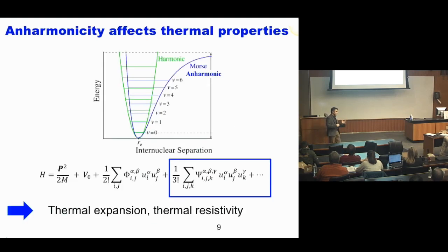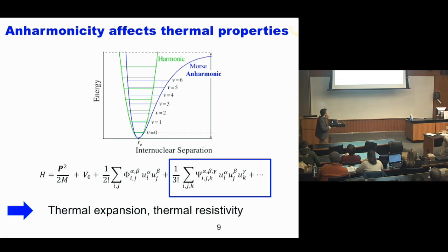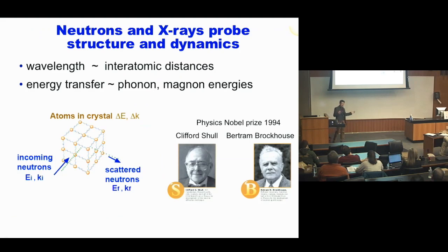The harmonic approximation is often too simplistic. To understand thermal transport, we need to go beyond that picture and consider higher-order terms in the interatomic potentials - deviations from the parabolic behavior. This anharmonicity is the source of important functional properties of materials, namely the thermal resistivity as well as thermal expansion.